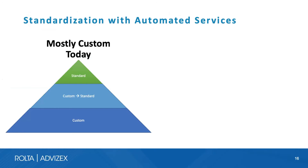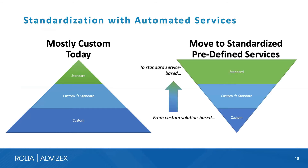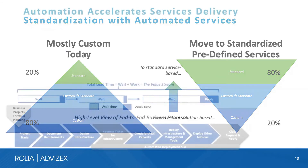The key for any organization is to look at this maturity continuum, identify where they are today, and determine where they should be based on what their business customers are asking. The way we help customers achieve this is through standardization of automated services — flipping from mostly customized, manually deployed services to predefined, standardized services. The goal should be 80% standardized and 20% customized.